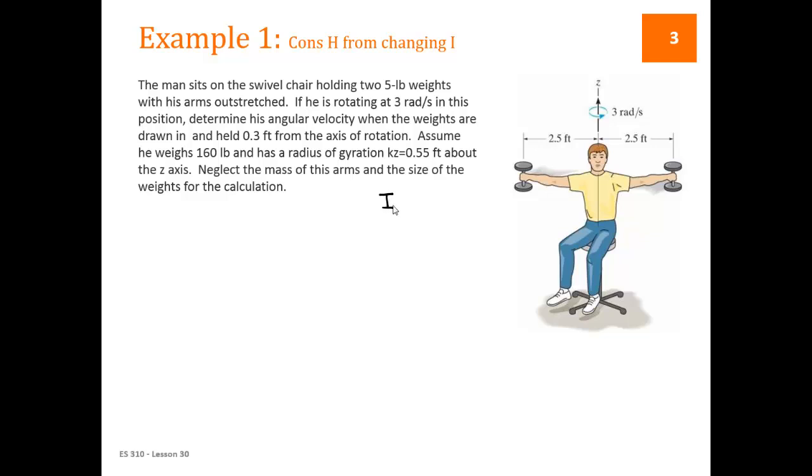He's going to start spinning faster and we are to determine how fast he ends up spinning. We're given his weight and his radius of gyration about the z-axis and we're given the two 5-lb weights that he's holding outwards. So from his weight and the radius of gyration we can find the man's moment of inertia to be mass times kz squared.